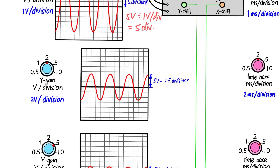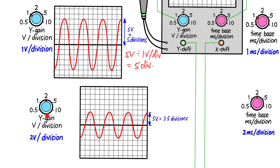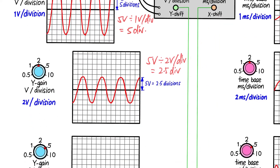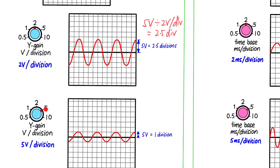Now if we change the Y gain for the same input to 2 volts per division, then 5 volts divided by 2 volts per division gives 2.5 divisions. So the same input wave will now occupy 2.5 divisions as the amplitude. And if we change it to 5 volts per division, then 5 volts divided by 5 volts per division gives just 1 division, so the amplitude occupies only one division.